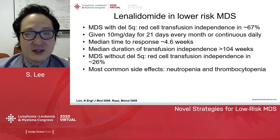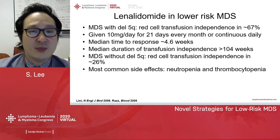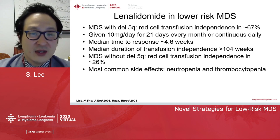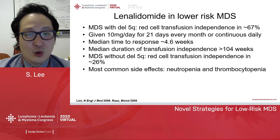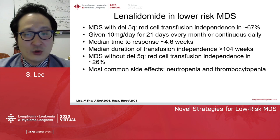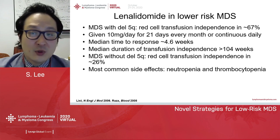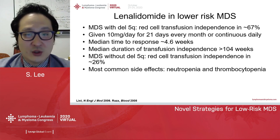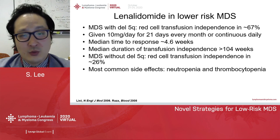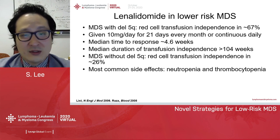Lenalidomide is utilized in low-risk MDS, especially for those with deletion 5Q abnormality. In MDS patients with deletion 5Q, use of lenalidomide can achieve red cell transfusion independence in about 67% of patients. The typical dose is 10 mg per day for 21 days every month or continuously, and some patients may require dose reduction due to development of cytopenias. Median time to response is 4.6 weeks. Lenalidomide has also been tested in patients without deletion 5Q; however, the response rate is lower, with red cell transfusion independence in 26% of patients. Most common side effects are neutropenia and thrombocytopenia.